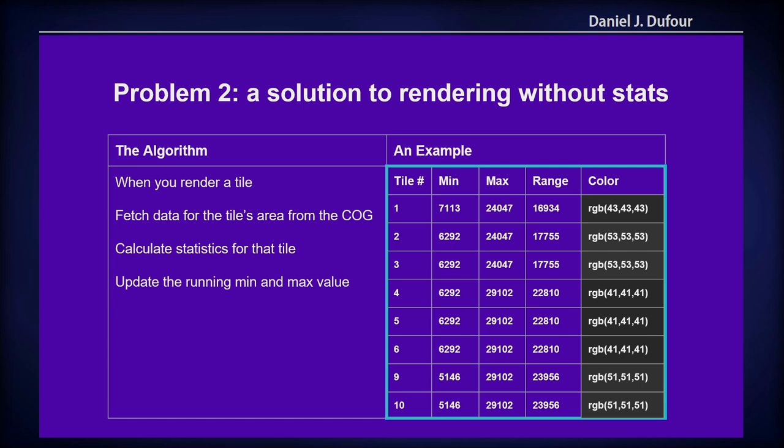At some point you reach a point where — it really depends on the data, but if it's a satellite image, odds are there aren't just completely random color changes. After maybe 10 tiles you've loaded, which might take up a lot of your screen, you're not going to have any big changes in the min/max — maybe none after that.